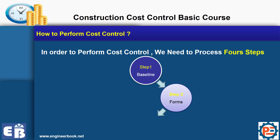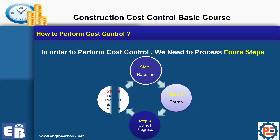So step one is preparing the baseline. Step two is preparing the forms where you are going to collect the information. Then you put all this information together in other forms — we call this step collecting progress. Then you need to report your progress and may take some action which can impact the baseline. Project management is an iterative process. You need to always revise your baseline and provide more accurate information. Thanks to Microsoft Excel, it makes our life much easier, and we will discuss all four steps in this course.